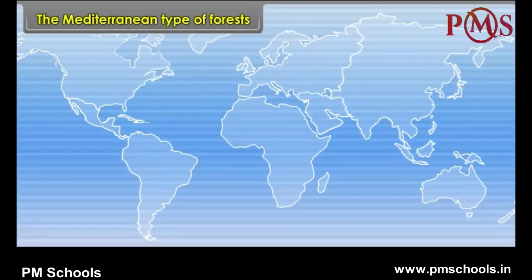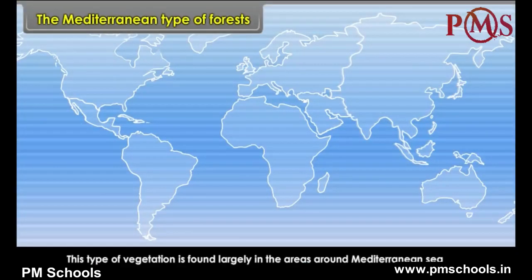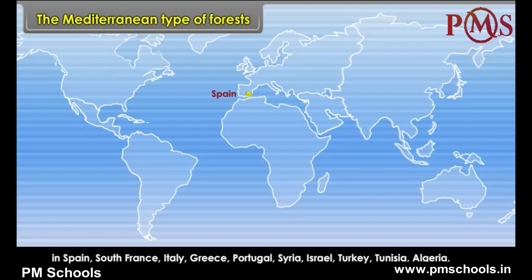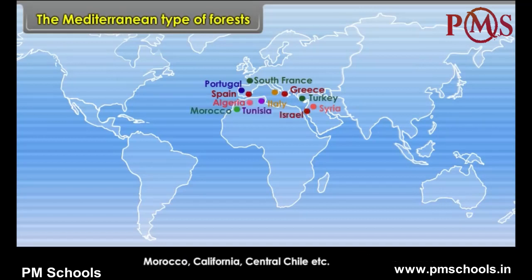The Mediterranean Type of Forests. This type of vegetation is found largely in the areas around the Mediterranean Sea in Spain, South France, Italy, Greece, Portugal, Syria, Israel, Turkey, Tunisia, Algeria, Morocco, California, Central Chile etc.